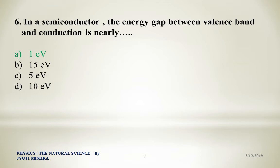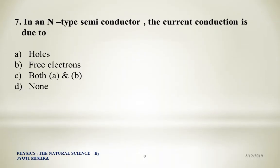Question number 7: In an N-type semiconductor, the current conduction is due to — Option A: holes. Option B: free electrons. Option C: both A and B. Option D: none. As seen in previous questions, in an N-type semiconductor holes are minority carriers and free electrons are majority carriers. Therefore, current conduction will be primarily due to the majority carriers — free electrons.